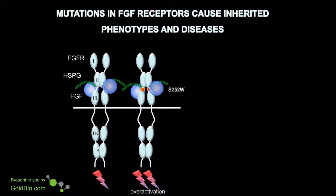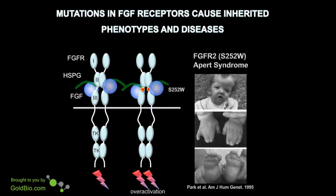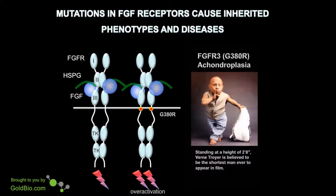This S252W mutation, if it occurs in humans, can lead to a disease called Apert syndrome, in which children born with this syndrome and these mutations in FGF receptor 2 develop premature fusion of the cranial sutures, leading to abnormal shape of the skull, and they also have abnormalities in their hands and feet. On the other hand, the G380R mutation in the transmembrane domain of FGF receptor 3 modestly activates FGF receptor 3 and leads to a disease called achondroplasia, which is the most common form of dwarfism in humans.